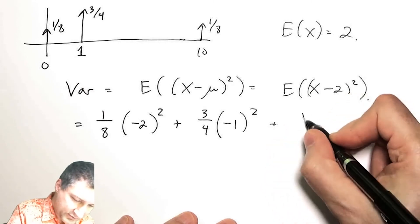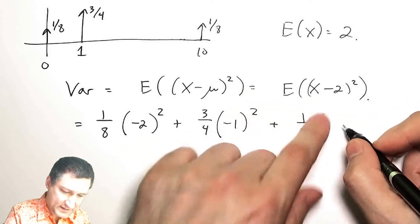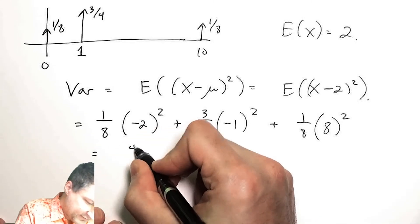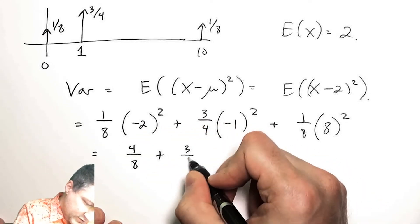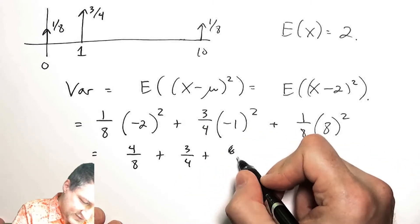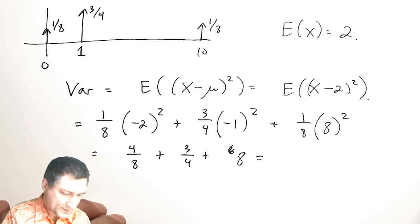And with probability 1/8, I have (10 minus 2) squared. I have 4/8, plus 3/4, plus 64/8, which I guess is just 8.